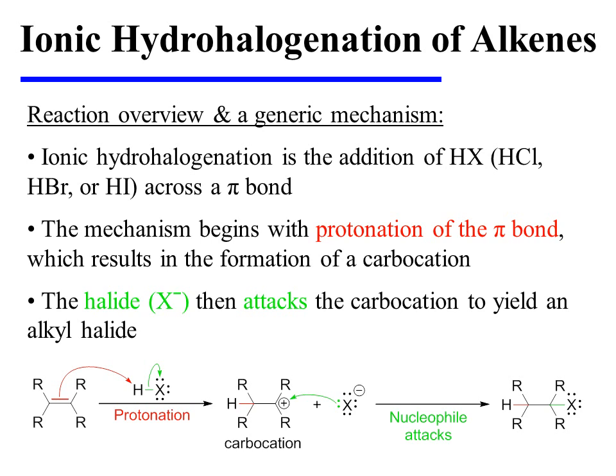Ionic hydrohalogenation is the addition of HX — namely HCl, HBr, or HI — across a pi bond. The mechanism begins with the protonation of the pi bond, which results in the formation of a carbocation. The halide then attacks the carbocation, yielding an alkyl halide as the reaction product.